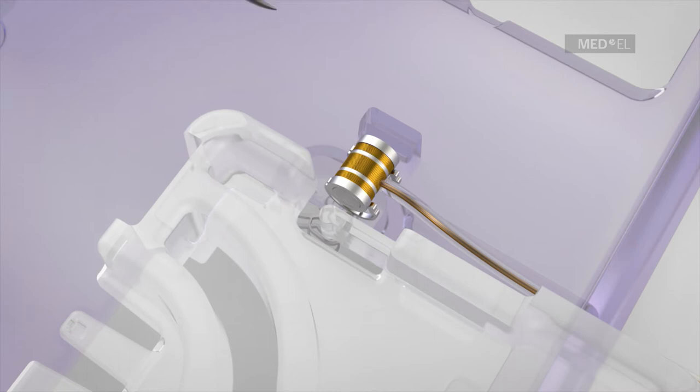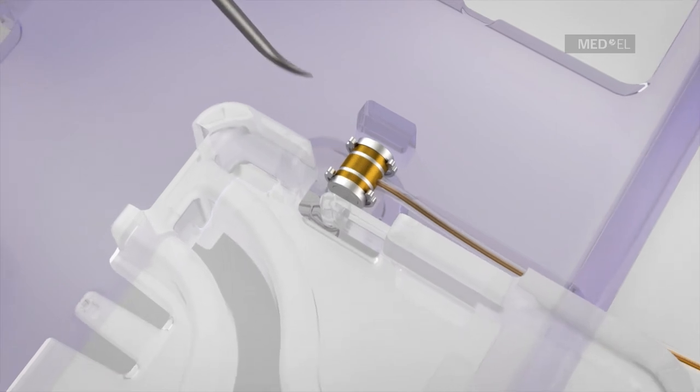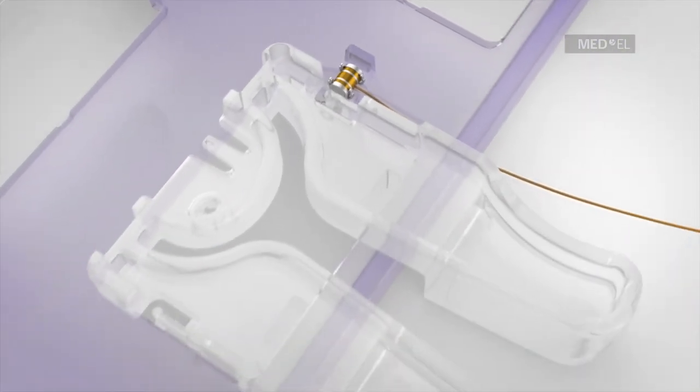The FMT is then gently pushed down to attach it to the coupler. Once the FMT has snapped into the cage of the coupler,